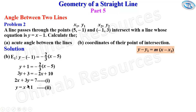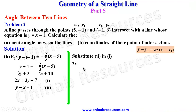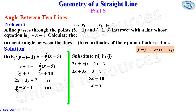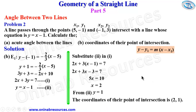Substituting equation 2 into equation 1 to get x: 2x plus 3(x minus 1) equals 7, giving 2x plus 3x minus 3 equals 7, so 5x equals 10, meaning x equals 2. Substituting x equals 2 into equation 2: y equals 2 minus 1, which equals 1. So the coordinates of their point of intersection are (2, 1). That's all for problem 2.